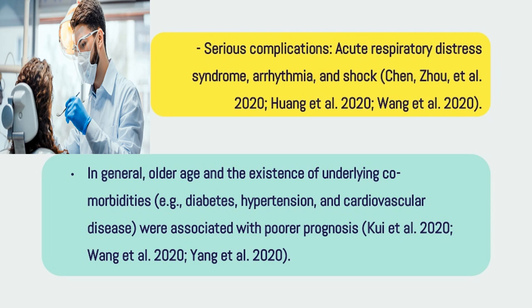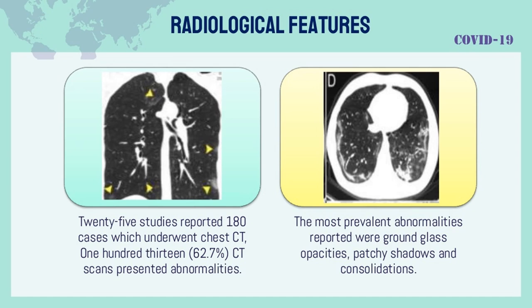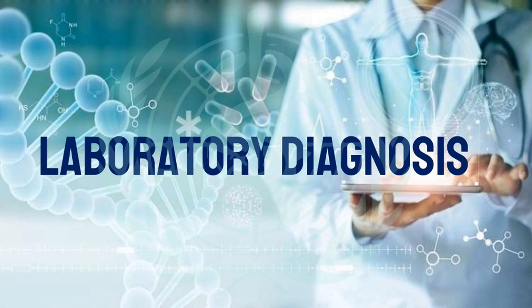Serious complications include acute respiratory distress syndrome, arrhythmia, and shock (Chan, Zhou et al. 2020; Huang et al. 2020). 25 studies reported 180 cases which underwent chest CT; 113 (62.7%) presented abnormalities. The most prevalent abnormalities reported were ground glass opacities, patchy shadows, and consolidations. Radiological features are significant diagnostic indicators.